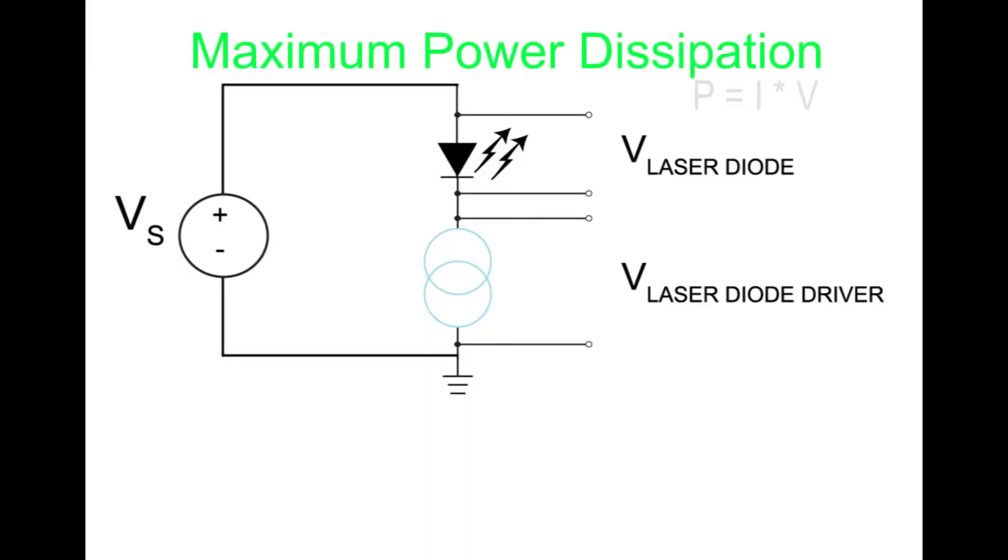With a linear current source, some of the power delivered by the power supply goes to the laser diode, and some is used in the laser diode driver. The maximum internal power dissipation of a driver is the limit past which thermal damage to internal electronic components is possible.